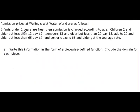All right. Let's try this one. Admission prices at Welling's Wet Water World are as follows. Infants under two years are free. Then admission is charged according to age. So let's see. It asks us to write the piecewise function. So let's just write that as we go. So this is admission. So we'll call it A(t), t being age. And we have infants would be zero to two years. Be free.